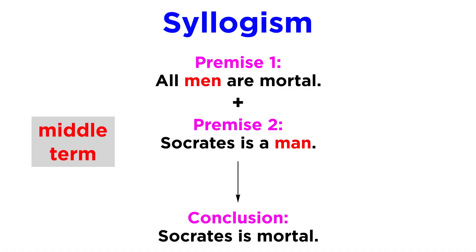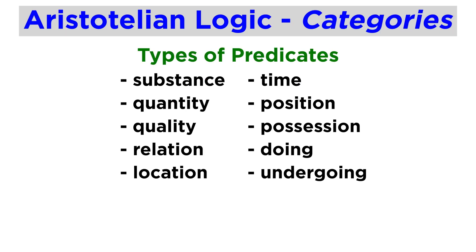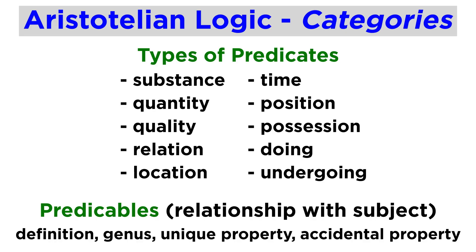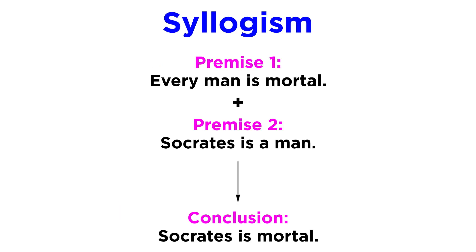The repeated term which connects both premises, allowing for the conclusion, is called a middle term. Aristotle names ten kinds of predicates in his Categories — which in Greek also literally means predicates. Those are substance, quantity, quality, relation, location, time, position, possession, doing, and undergoing. Regarding their relationships with the subject, or predicables, he named four: definition, genus, unique property, or accidental property. As we can see with the Socrates example, subjects and predicates can be a combination of several different things, so we can substitute some of these words for the aforementioned variables.